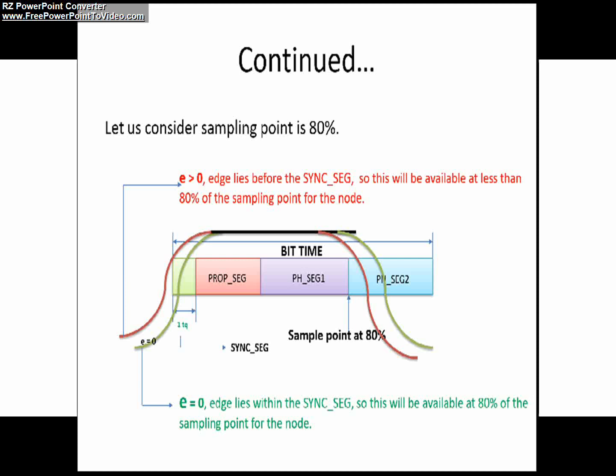Now consider the case 3. We have seen within the sync segment, before the sync segment, obviously the case 3 will be after the sync segment. In this case the edge phase error E will be less than zero. Once again the edge will not occur at 80% of the sampling point, hence receiver might not determine this incoming bit properly. Now again you may ask how to compensate this edge phase error.